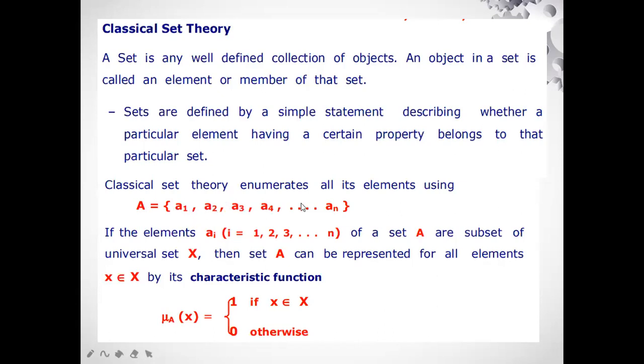You have a set A and it has the elements from A1 to An. That means how many elements we have in the set A? We have n number of elements. So if the elements Ai where i is equal to 1, 2, n. That means Ai, A1, A2, A3 till An. So i is 1, 2, n of a subset of universal set X. Then set A can be represented for all elements.